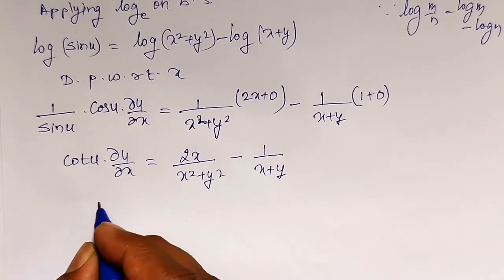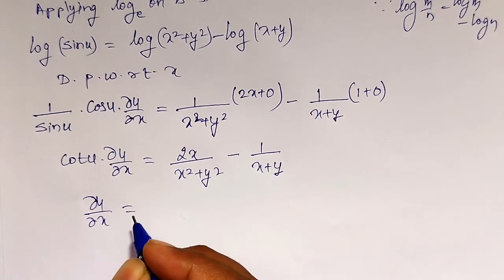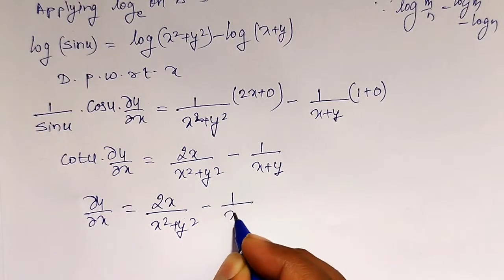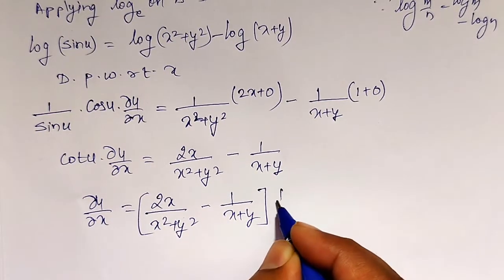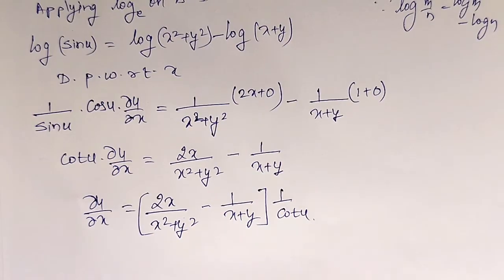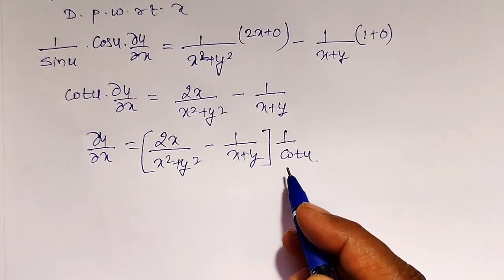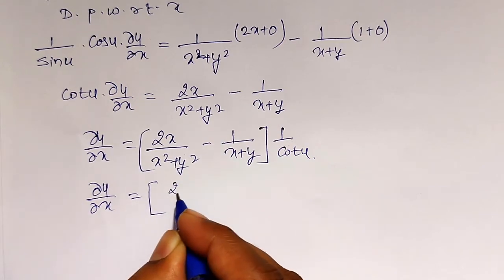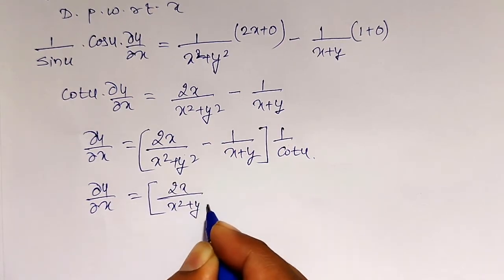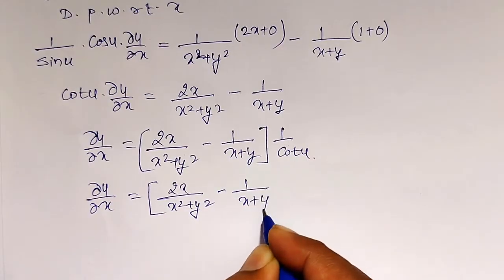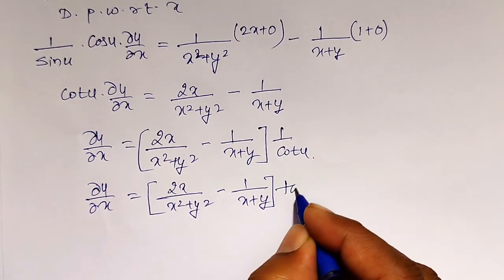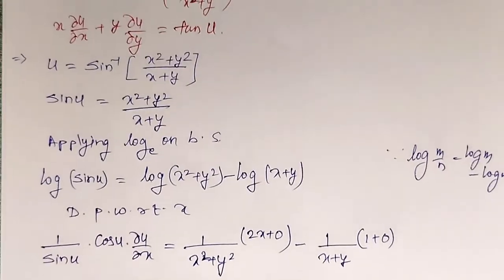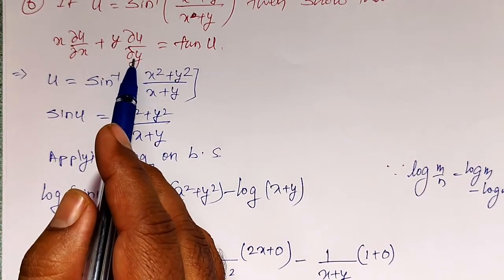Solving for ∂u/∂x: ∂u/∂x = [2x/(x² + y²) − 1/(x + y)] · 1/cot(u). Since 1/cot(u) = tan(u), I can write: ∂u/∂x = [2x/(x² + y²) − 1/(x + y)] · tan(u). That is one term concluded.